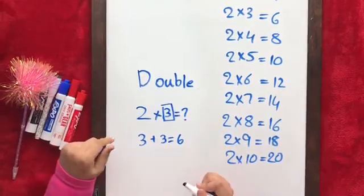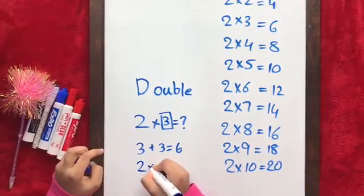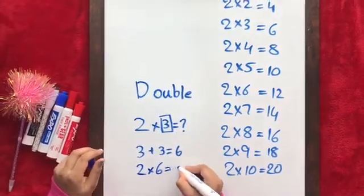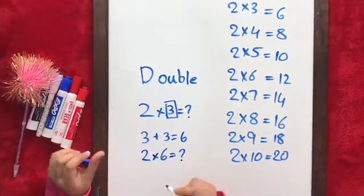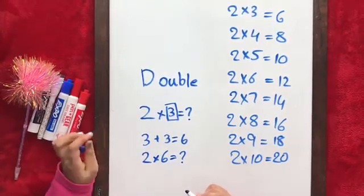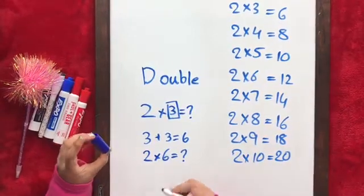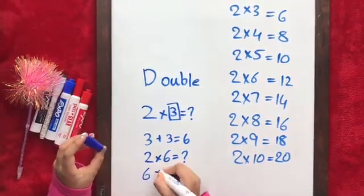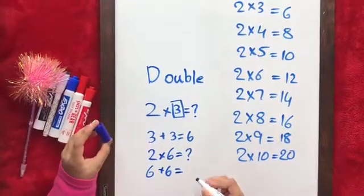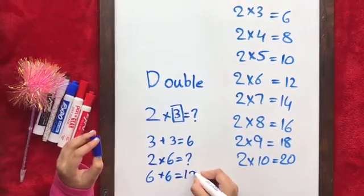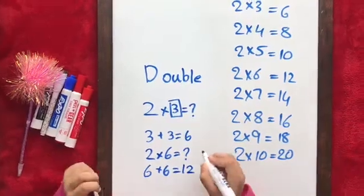And let's do another example. How about 2 times 6 equals how many? What number shall we double? If you said 6, you are right. 6 plus 6 equals—if you said 12, you are right. So that means 2 times 6 equals 12.